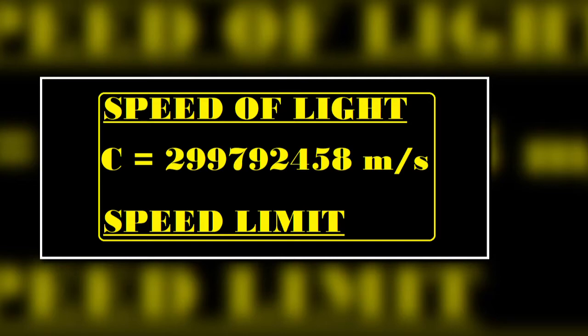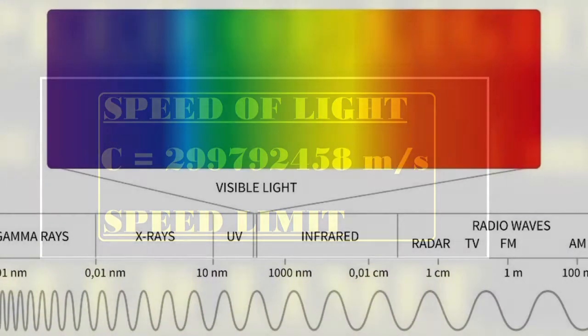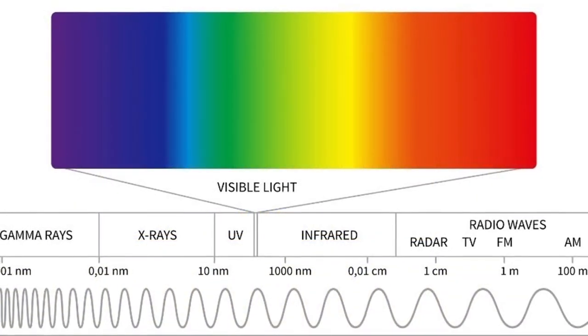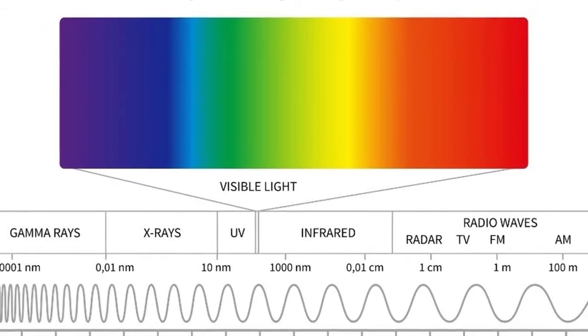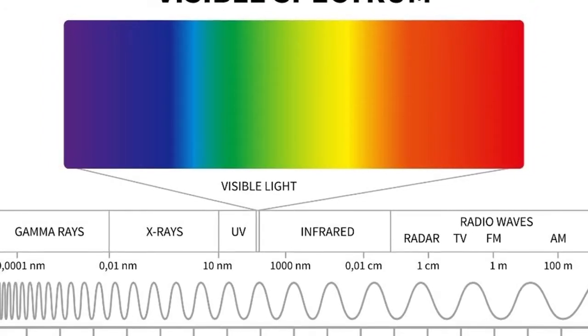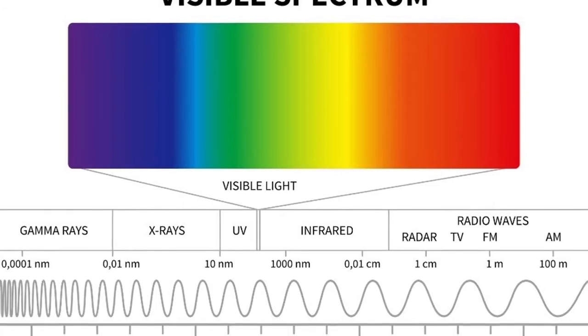But light is much more than what we can see. What we see as light is just a visible light. This visible light is just a tiny part of the electromagnetic spectrum, energy in the form of electromagnetic radiations.